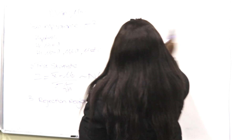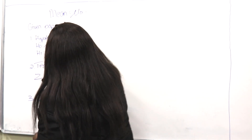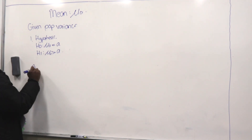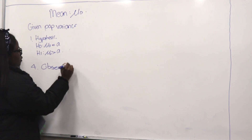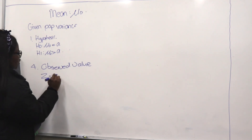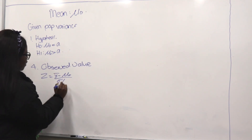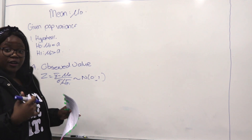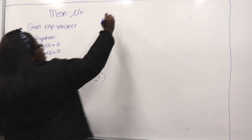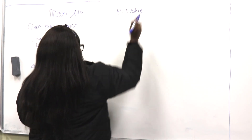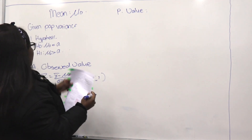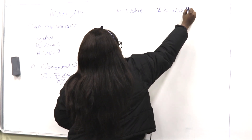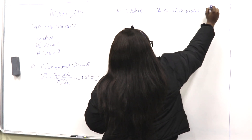After your rejection region — step three — step four is calculating your observed value, which involves substituting values into your equation. For the p-value in step five, where some get confused: note that the z-table works with less-than values.